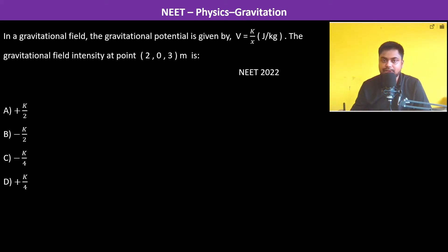In a gravitational field, the gravitational potential is given by V = k/x (joule per kg). The gravitational field intensity - so basically they are asking about the gravitational field intensity E. So we should remember...